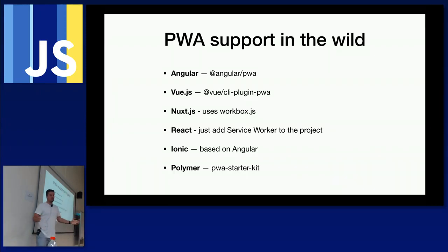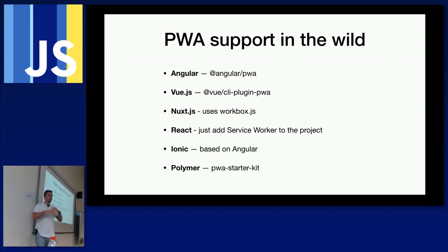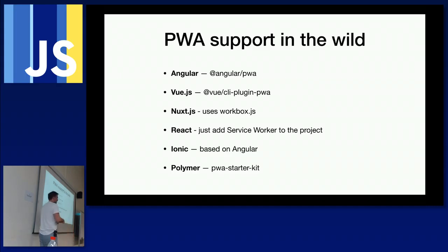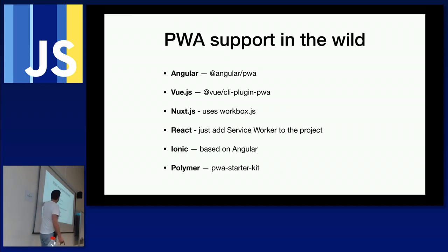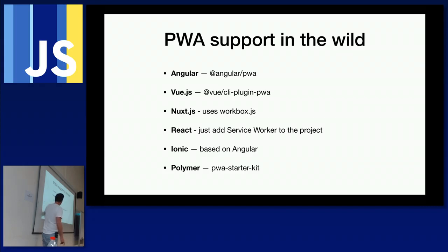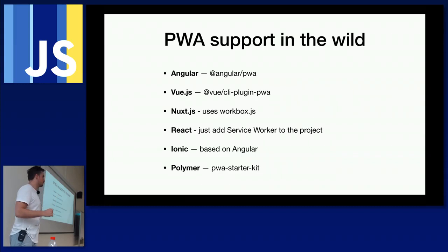Now you hopefully know what a progressive web app is. You're probably thinking: I use React or Angular — how do I use this? The good news is that all the major frameworks have support. For Angular: ng add @angular/pwa. For Vue: Nuxt.js uses Workbox.js too. For React: add a service worker or Workbox directly. Ionic — being Angular-based — works as well. Polymer has a PWA starter kit. The major frameworks have very good support for progressive web apps.